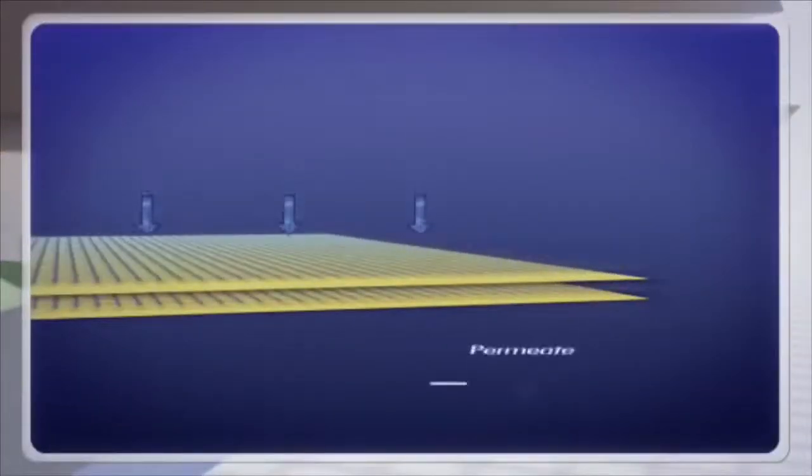The membrane layer is extremely thin. It allows water to pass through or permeate, while preventing other compounds from passing through.